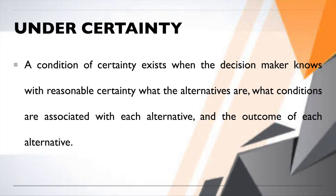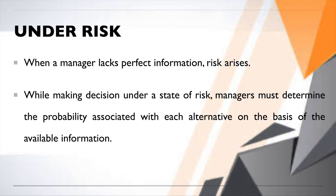Decisions made under certainty are quite easy because you are completely aware of the circumstances in and around the market. Next is under risk. When a manager lacks perfect information, risk arises. Under the state of risk, managers must determine the probability associated with each alternative on the basis of available information.